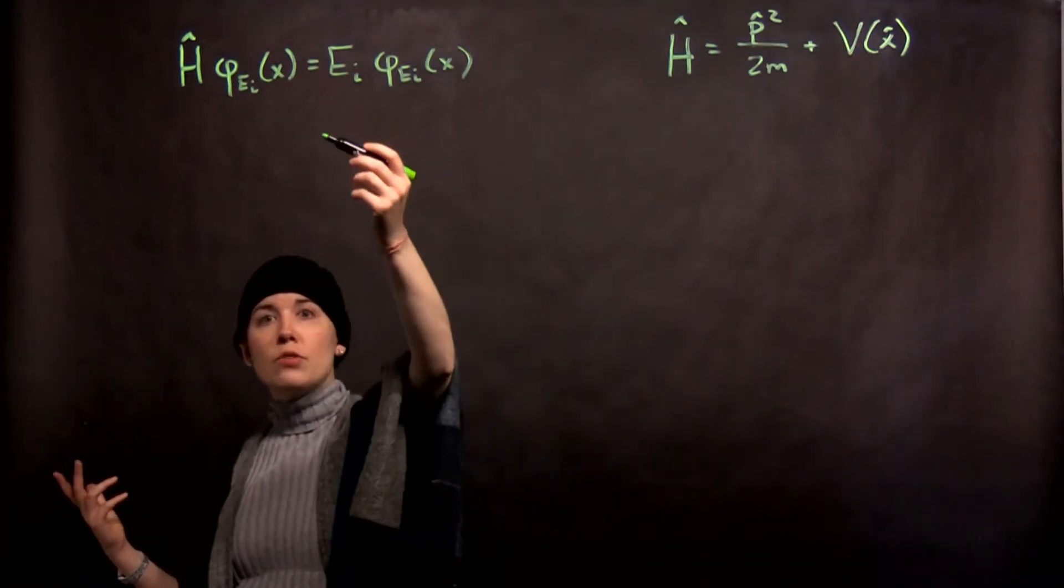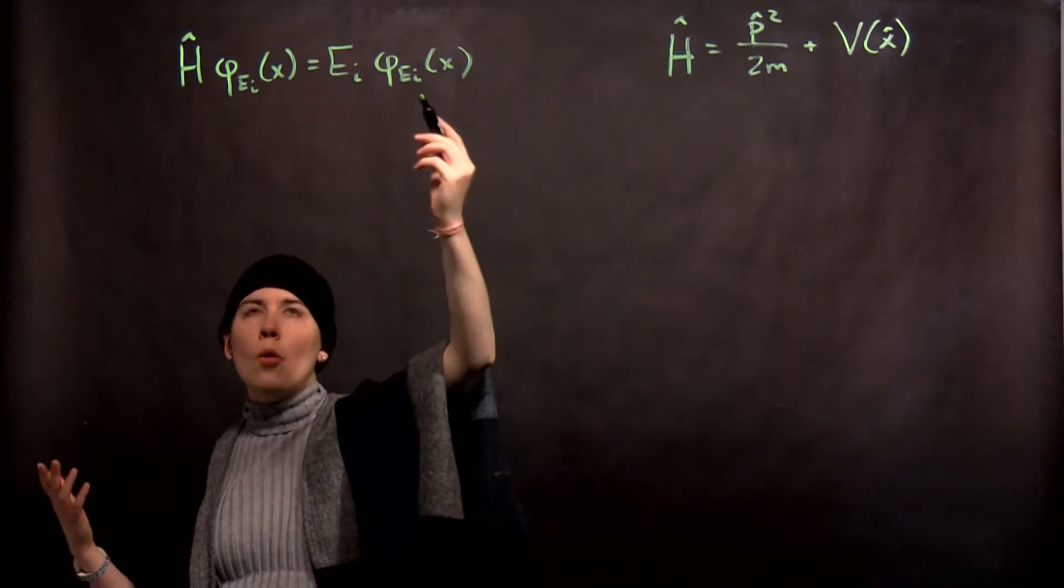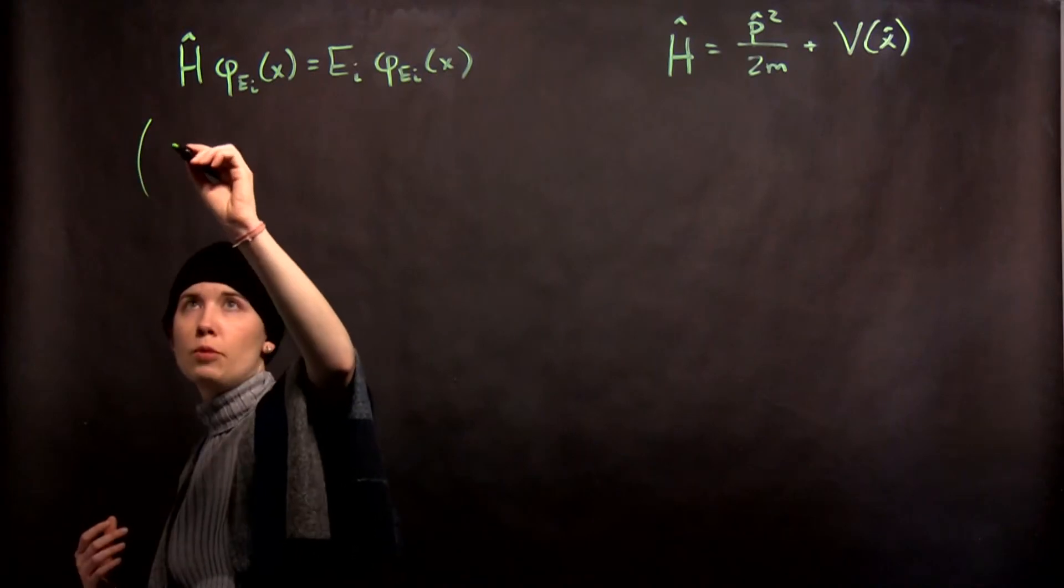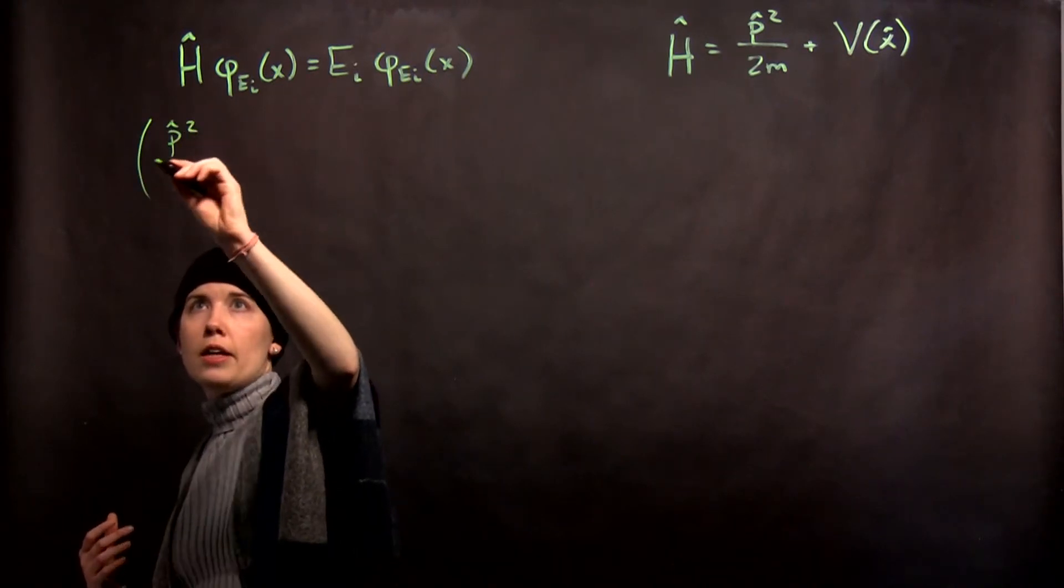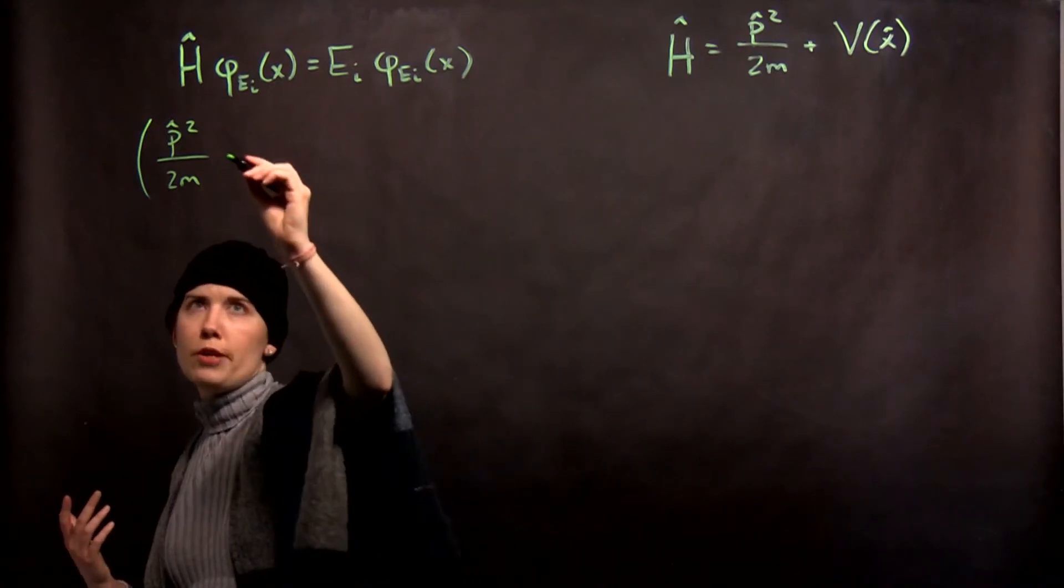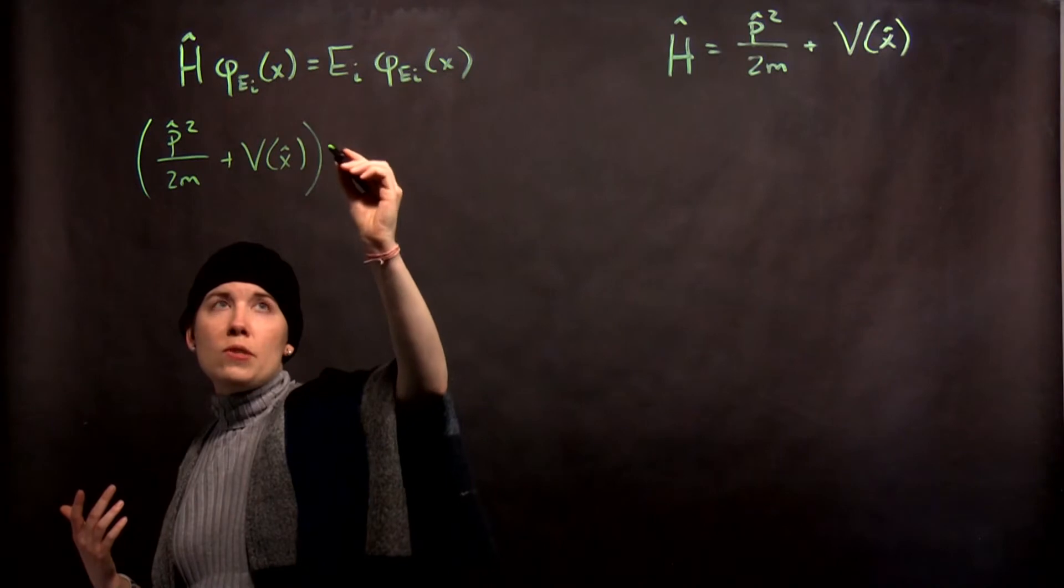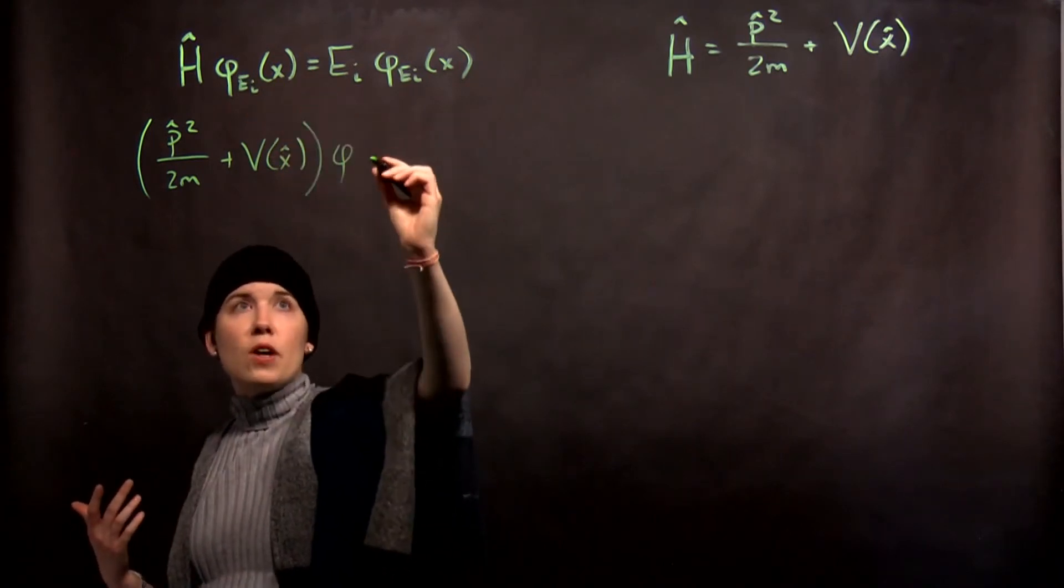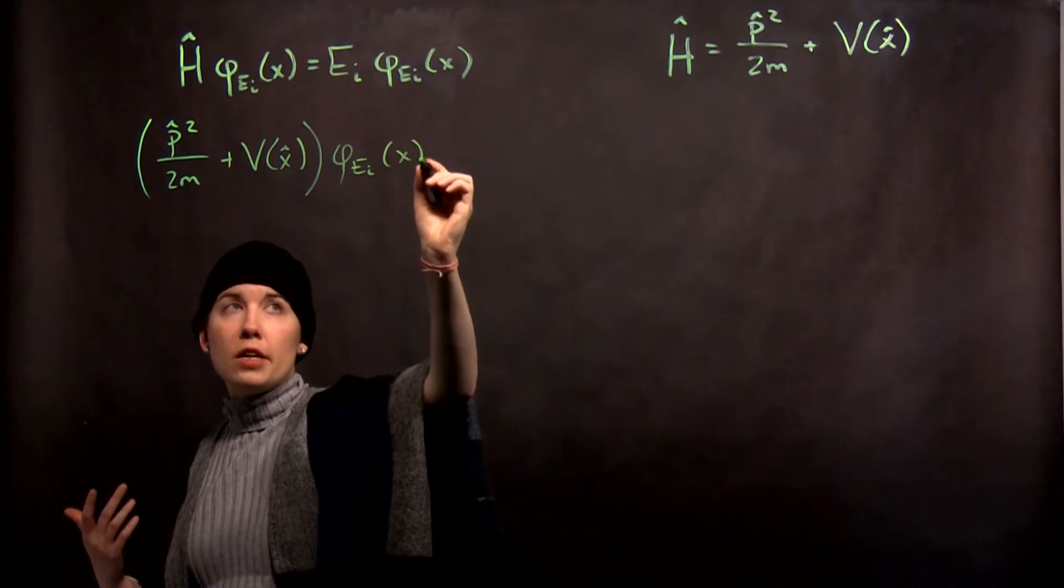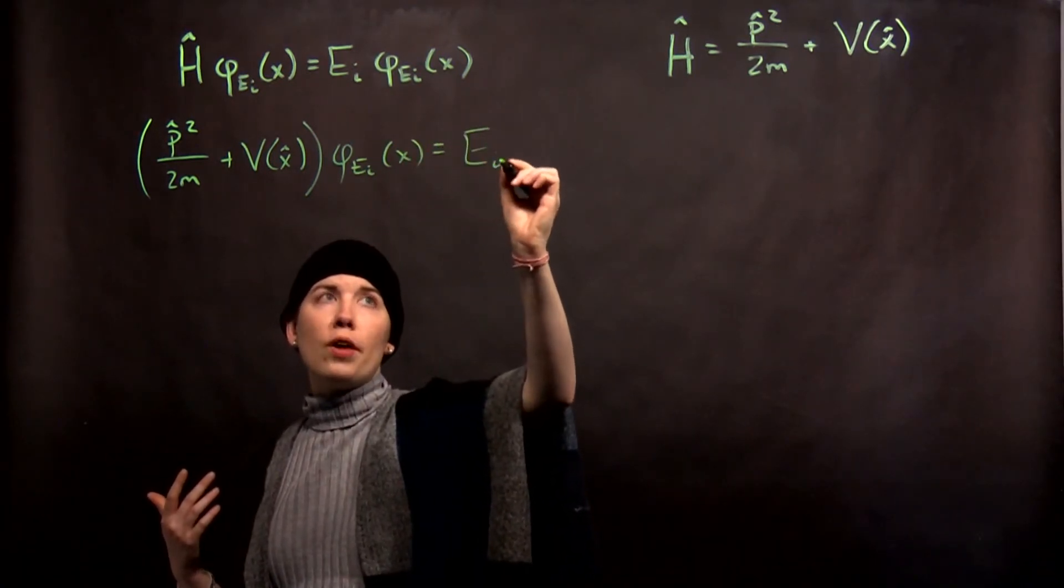So if we want to learn something about these energy eigenfunctions that are functions of position, we want to start simplifying this a little bit. So we can plug in our Hamiltonian and remember that we're going to need to actually make some operators up here. And remember that these phi's represent the special functions which are the energy eigenfunctions rather than just any wave function whatsoever.